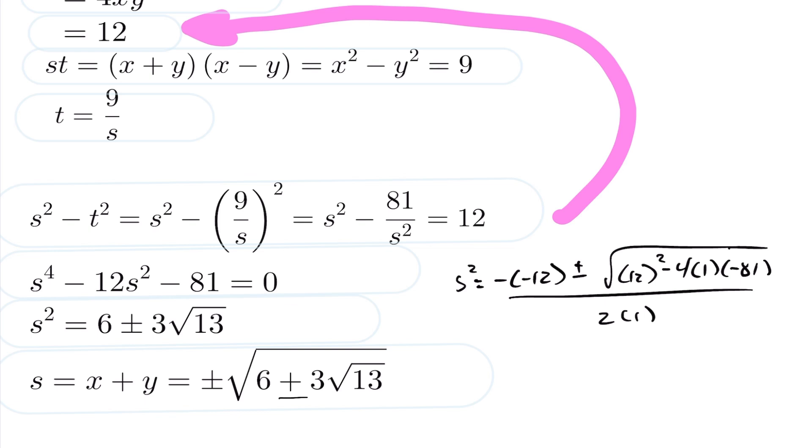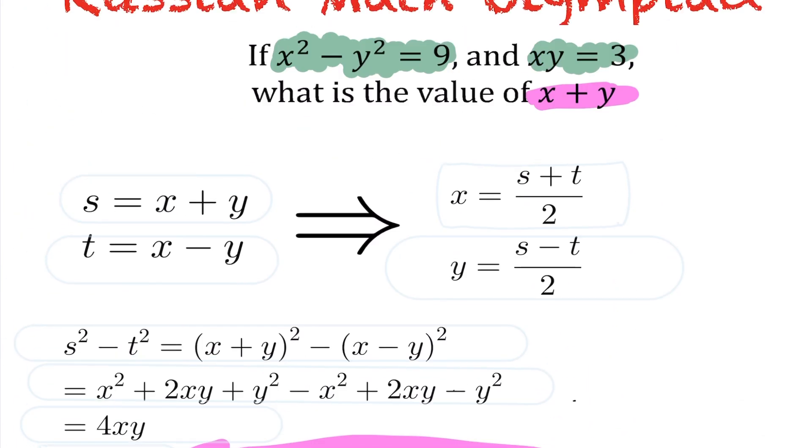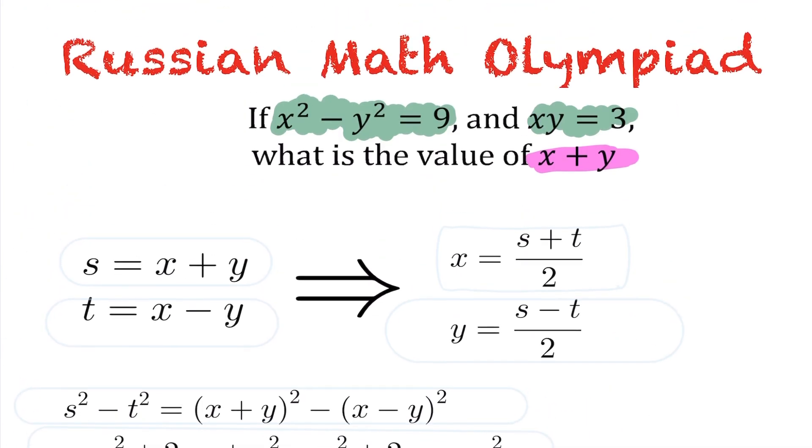So you end up getting here four different values for the x plus y. Some of them will be imaginary here, and you can explore that further if you wish. Alright, this is just a quick Russian math Olympiad question I thought I'd show you.